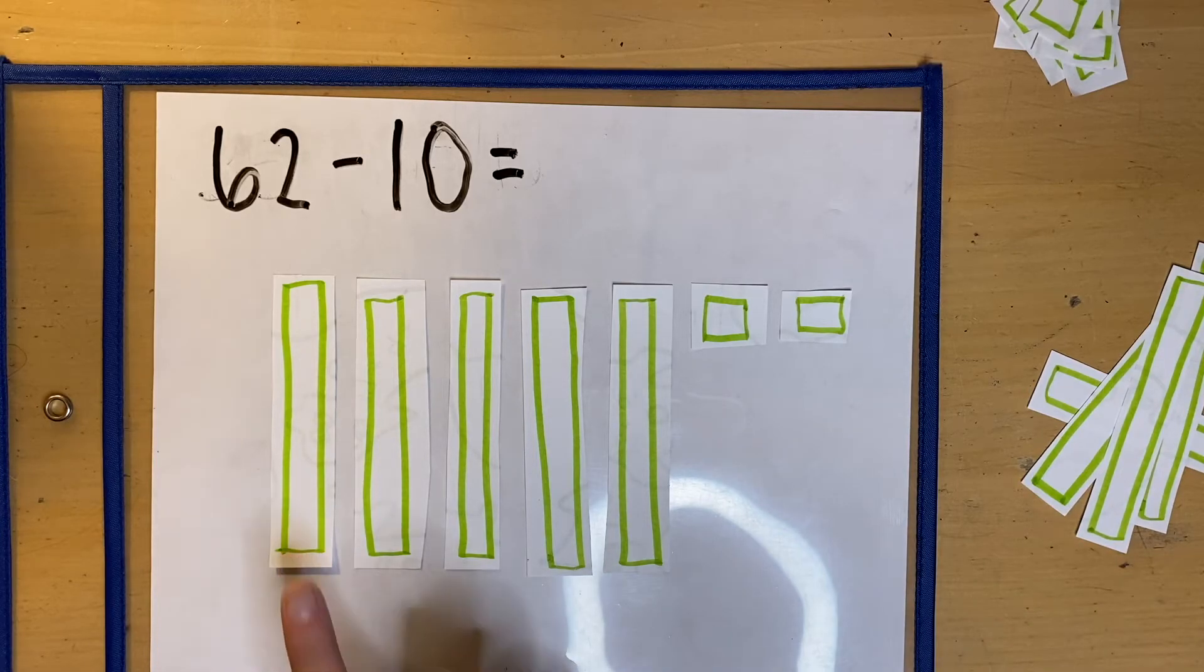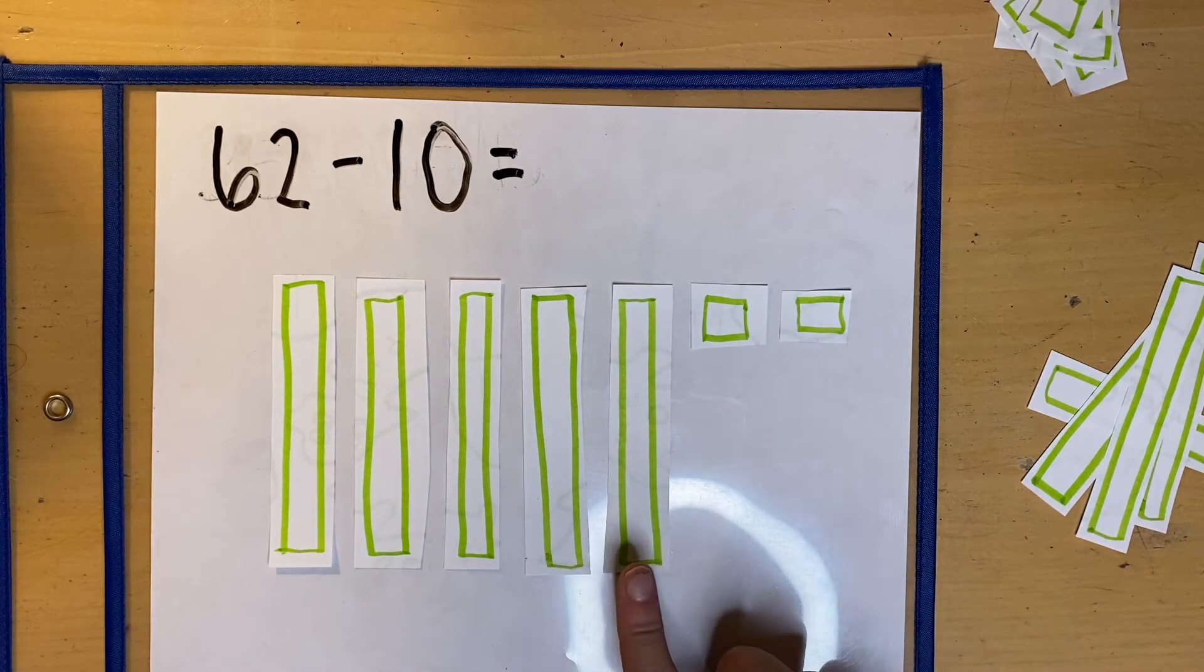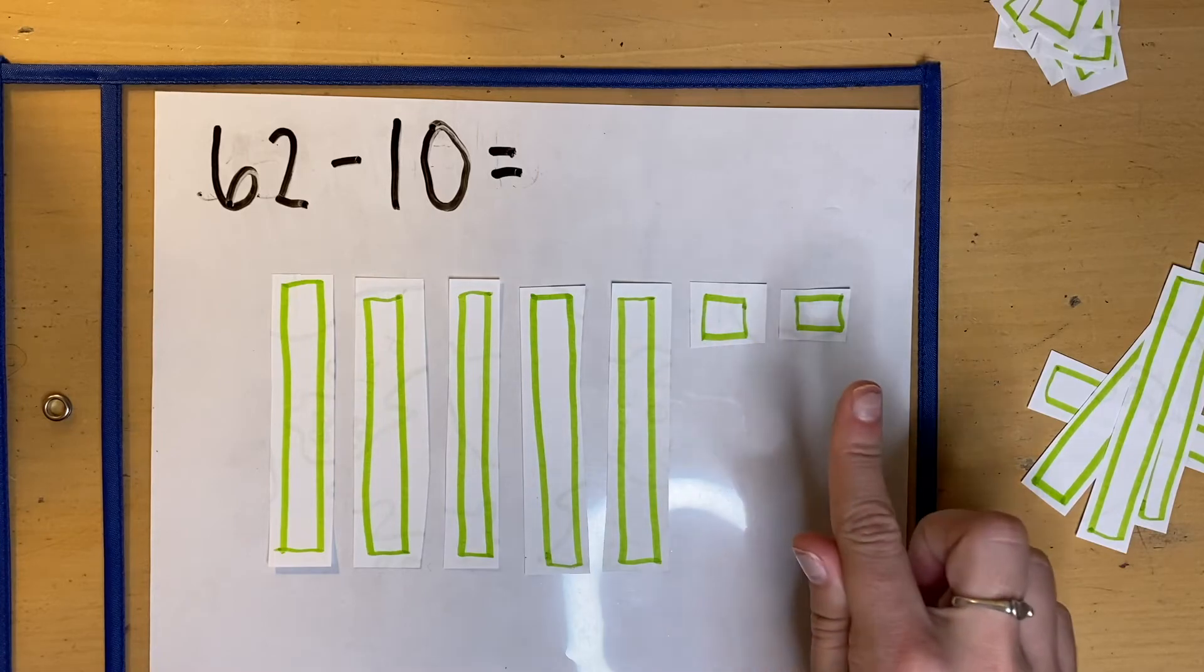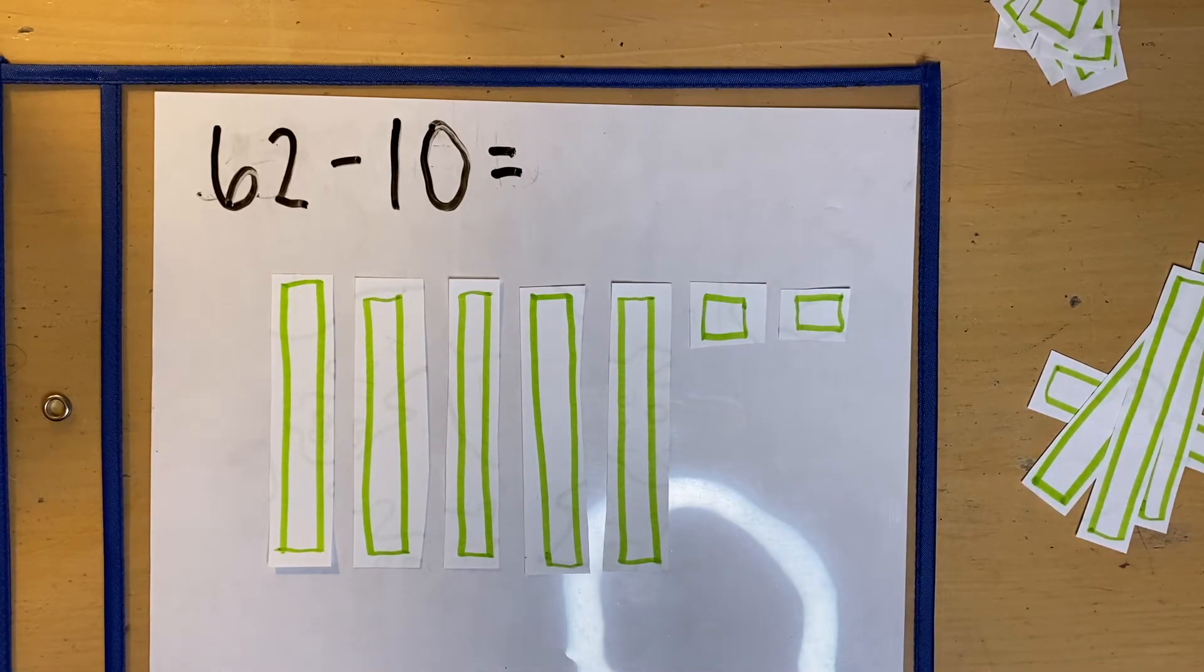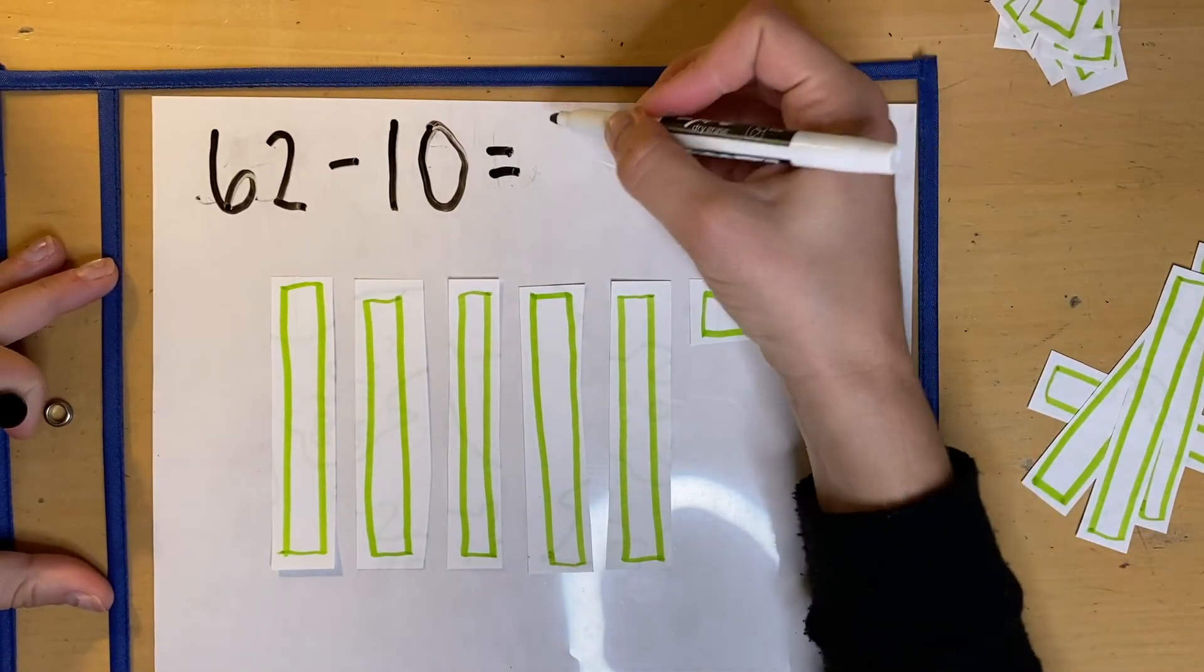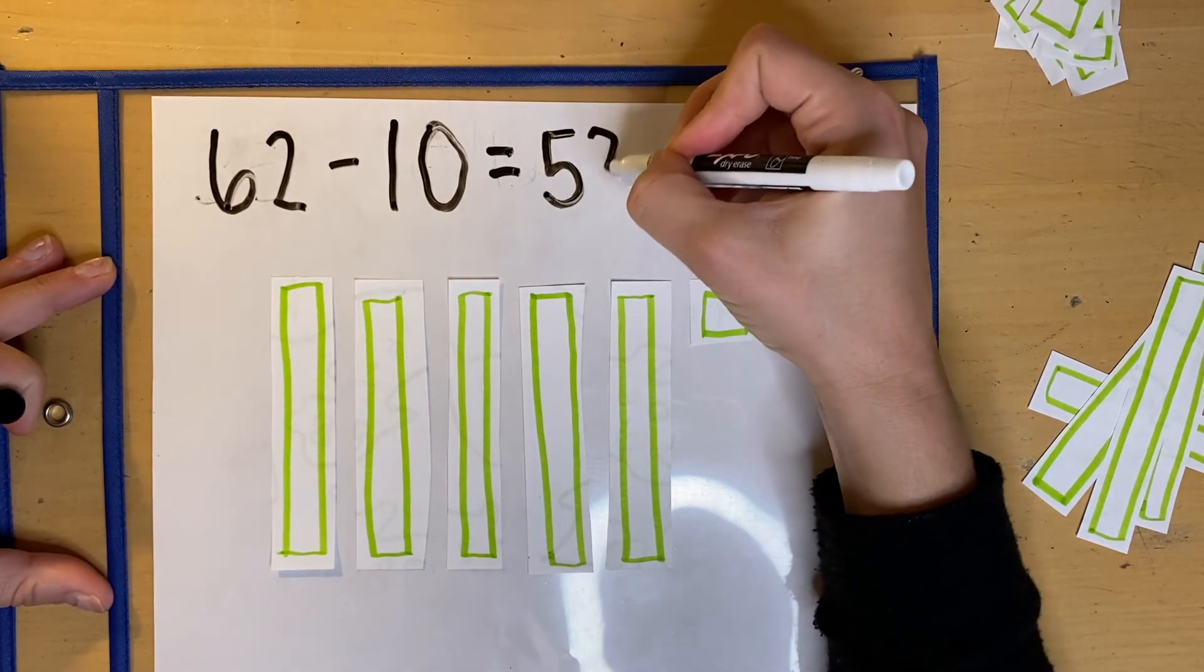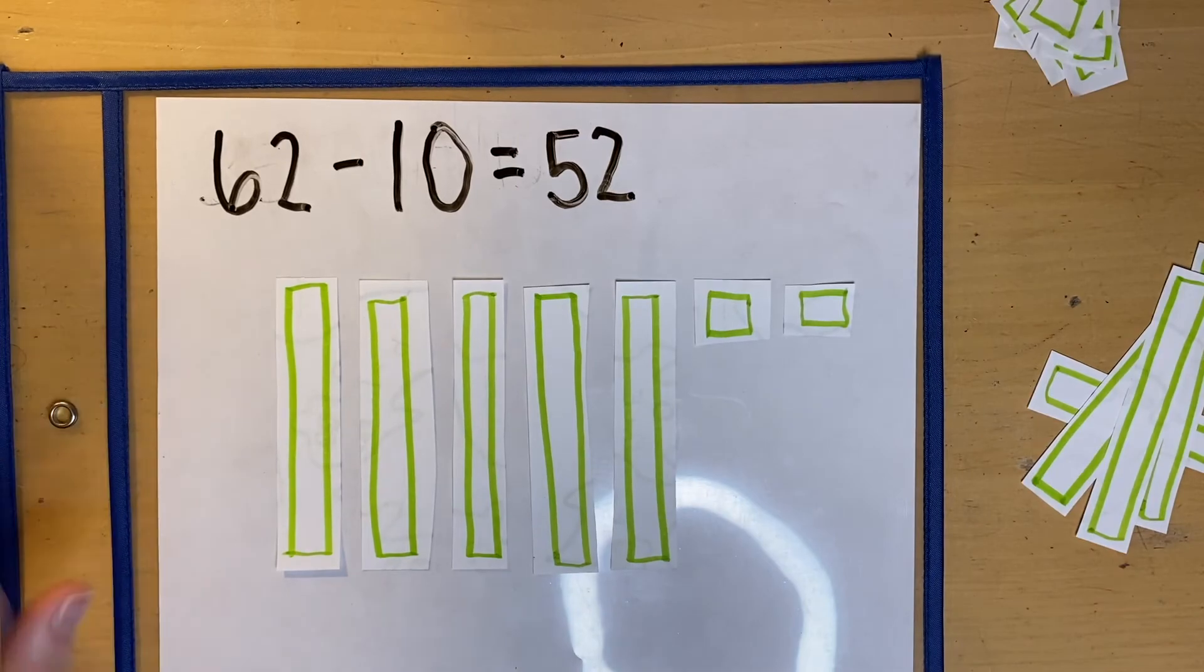So now count with me. 10, 20, 30, 40, 50, freeze. So that's all the 10s. 51, 52. So 62 minus 10 equals 52.